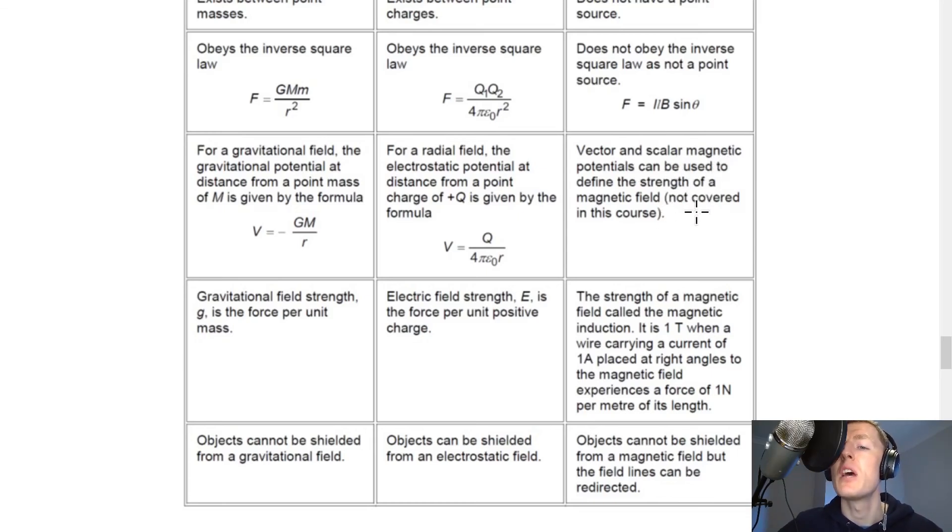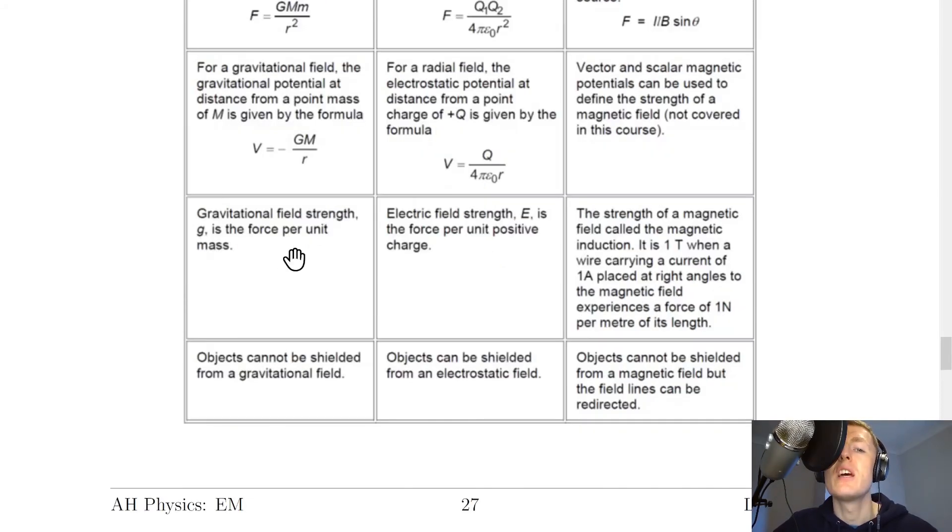Next we have definitions so gravitational field strength G is the force per unit mass or the weight per unit mass. Electric field strength E is the force per unit positive charge. And the strength of a magnetic field is called the magnetic induction.